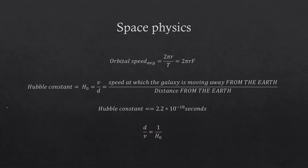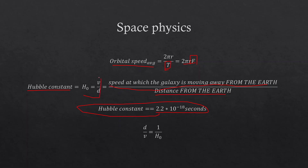Space physics is the new addition to the syllabus. Average orbital speed = 2πr/T. Since 1/T = f (frequency), orbital speed can also be written as 2πrf. The Hubble constant H₀ is the ratio of the speed at which a galaxy is moving away from Earth to its distance from Earth, with a value of 2.2 × 10⁻¹⁸ s⁻¹. Reciprocating this equation gives an estimate for the age of the universe. That's it — thank you for watching.